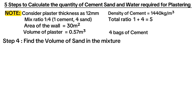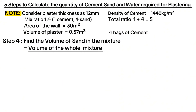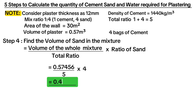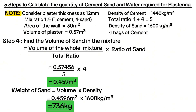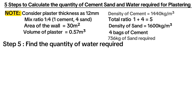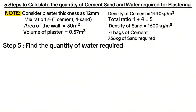Step 4 is to find the volume of sand required in the whole mixture. Volume of sand alone equals volume of the whole mixture divided by total ratio, multiplied by the ratio of sand, giving 0.4596 m³. Weight of sand equals volume multiplied by density; considering a density of 1,600 kg/m³, the weight of sand is 736 kilograms.